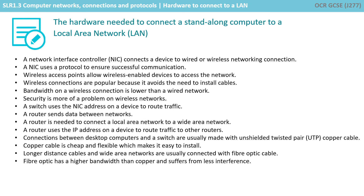Connections between desktop computers and a switch are usually made with unshielded twisted pair copper cable. Copper cable is cheap and flexible which makes it easy to install. Longer distance cables and wide area networks are usually connected with fibre optic cable. Fibre optic has a higher bandwidth than copper and suffers from less interference.